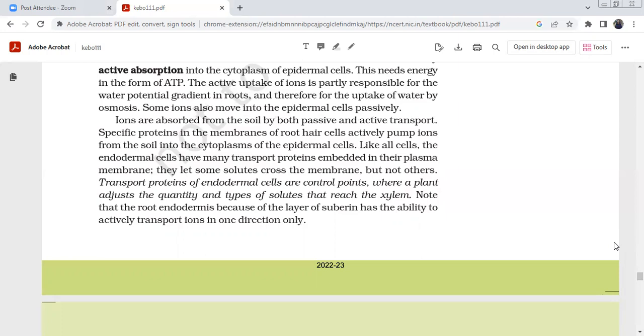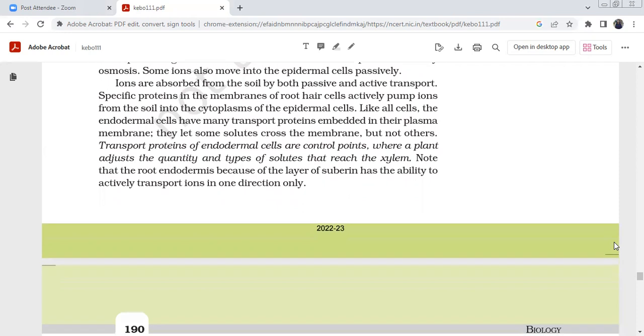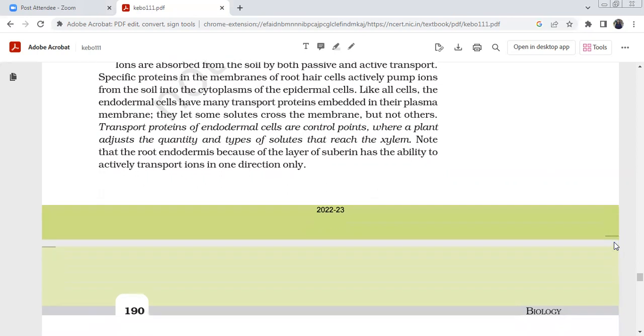Ions are absorbed from the soil by both active and passive transport. Specific proteins in the membranes of root hair cells actively pump ions from soil into the cytoplasm of epidermal cells. Like all cells, the endodermal cells have many transport proteins in the membrane, but not others. Transport proteins on endodermal cells are control points where the plant adjusts the quantity and types of solute that reaches the xylem. The root endodermis, because of the layer of suberin, has the ability to actively transport ions in one direction only.